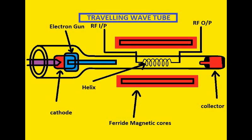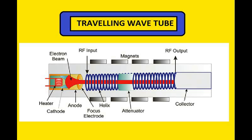Moreover, the short transit time in klystrons cannot give effective modulation. So in the traveling wave tube we make the electron beam interact with the RF field for a quite long time — the whole length of the tube. Whereas in klystrons the RF field is stationary in the cavities, and whenever the electron gets near to the cavity gaps the electron gets accelerated, thereby achieving velocity modulation.